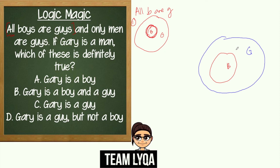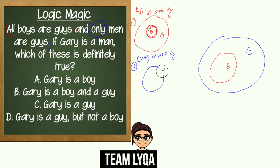Now we can move on to the next line: 'Only men are guys.' The keyword here is 'only.' When we say 'only men are guys,' it doesn't mean a separate circle — it means whoever is M, they are also G, and whoever is G, they are also M.